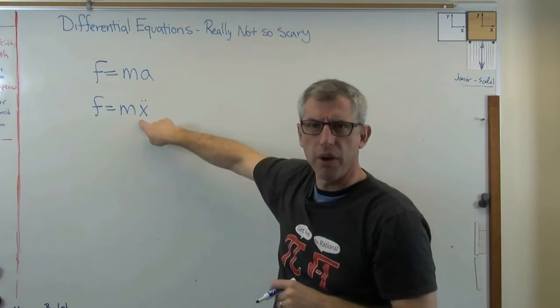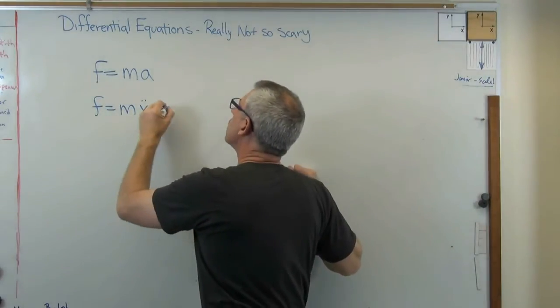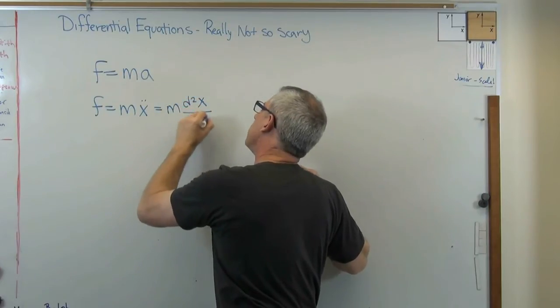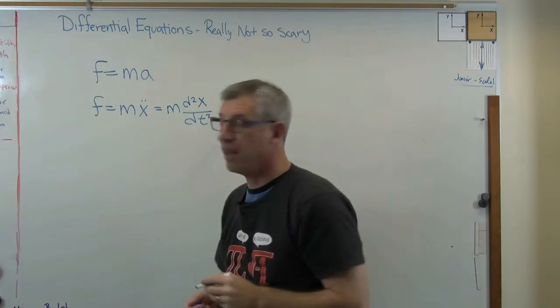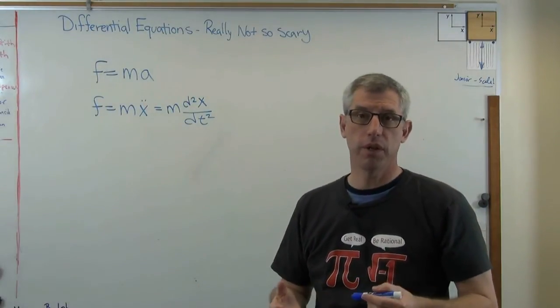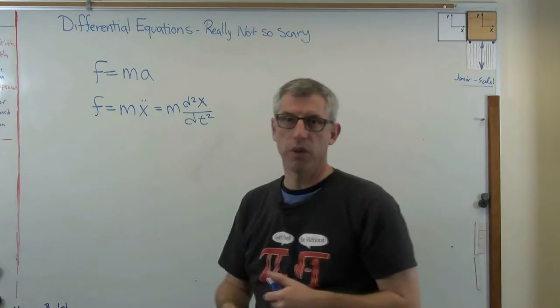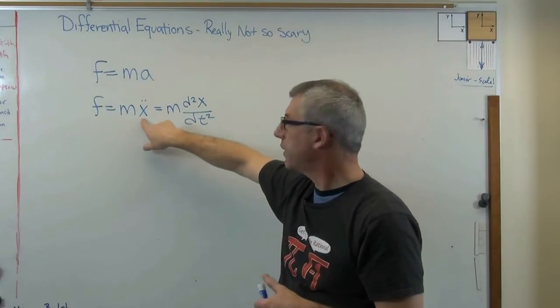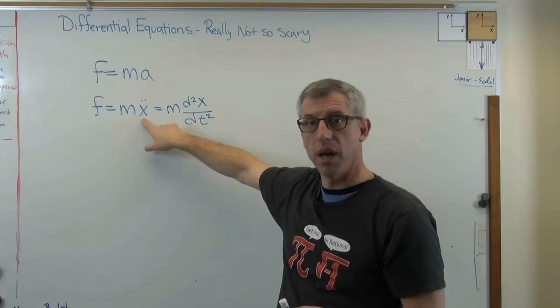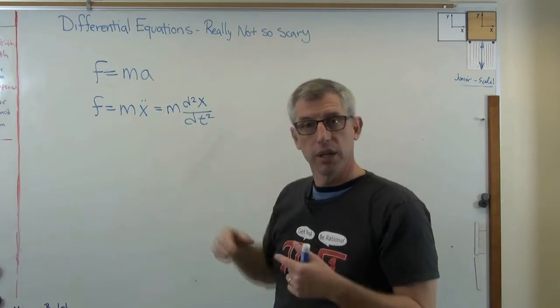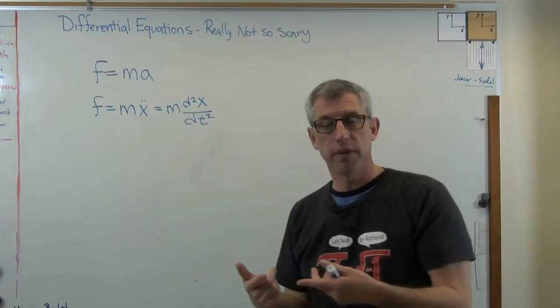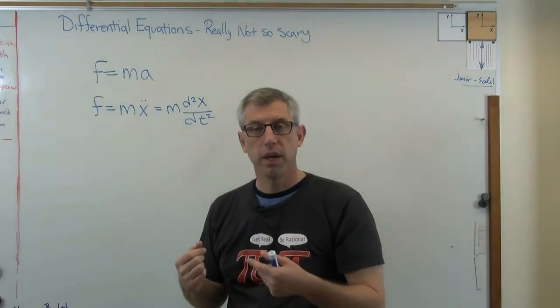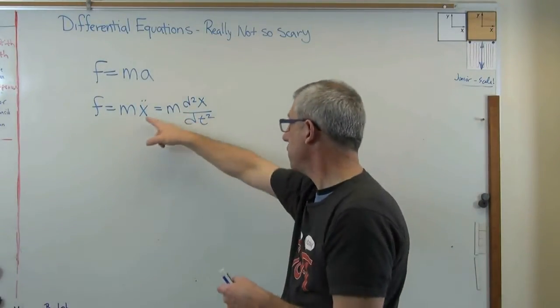F equals MX double dot, or if you prefer to do this in more explicit terminology, there you go. That's another way of writing the same thing. Because more than one person was involved in the development of calculus, we actually have more than one way to write identical things, and this is two of them right here. So MX double dot, that's the second derivative of position with respect to time, or if you prefer, it's the curvature of position. The slope of position, the first derivative is velocity, and the derivative of velocity, the slope of velocity with respect to time, is acceleration. So the curvature of position is acceleration.